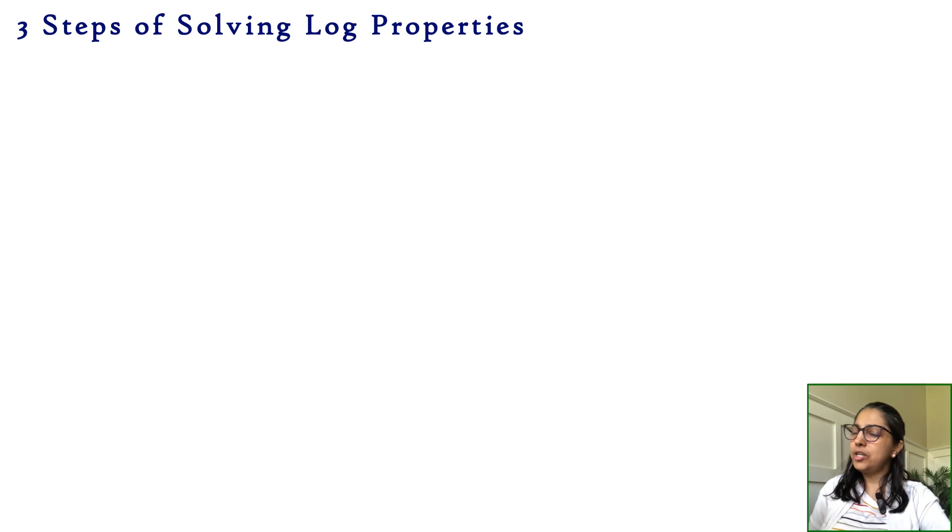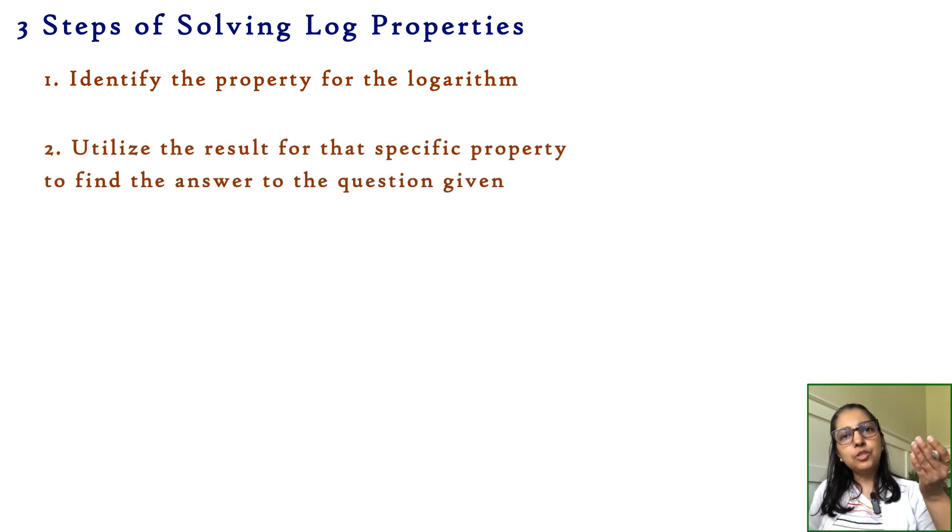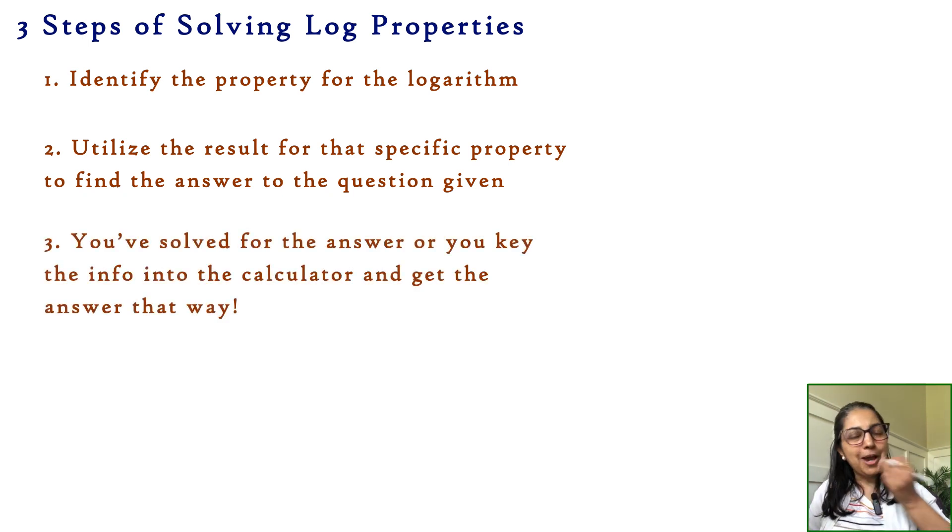The three steps are: first, identify the property for the logarithm. Step number two, utilize the result for that property to solve the expression or equation given to us. And step number three, either you have the answer or you key it into the calculator to get your answer. Easy breezy, three steps.